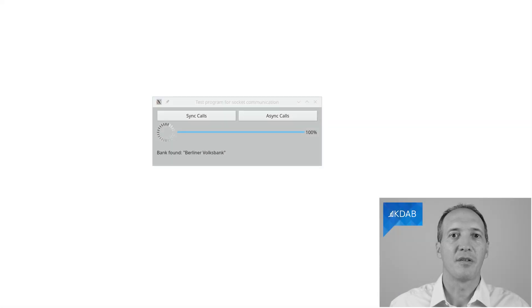So here is a small test program. It will do 10 calls to an online server, which gives us the name of banks. And we are going to do this both ways, synchronous and asynchronous.